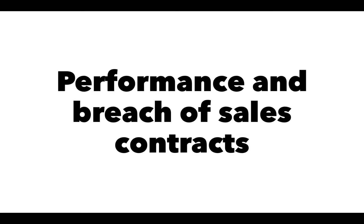Welcome back. So far we've discussed the formation of sales contracts, which is the first element of a contracting system that gives us the requirements of a valid contract. Now we take up performance of a sales contract — performance and breach, which is a failure to perform. In this lecture, we're going to be looking at the issues related to performance: how do we know when a buyer or a seller has performed under the agreement.